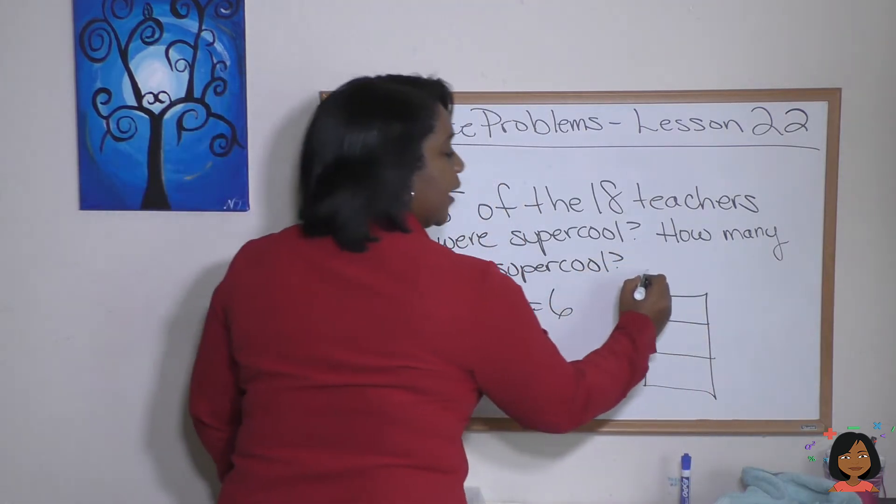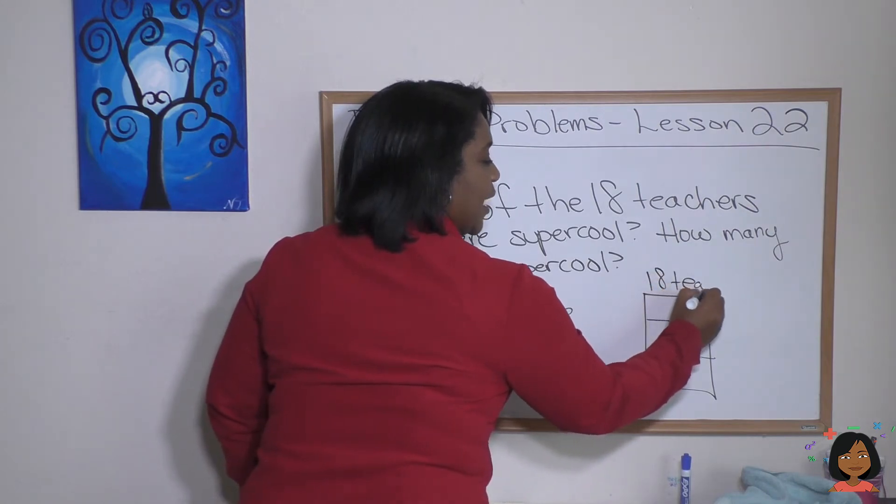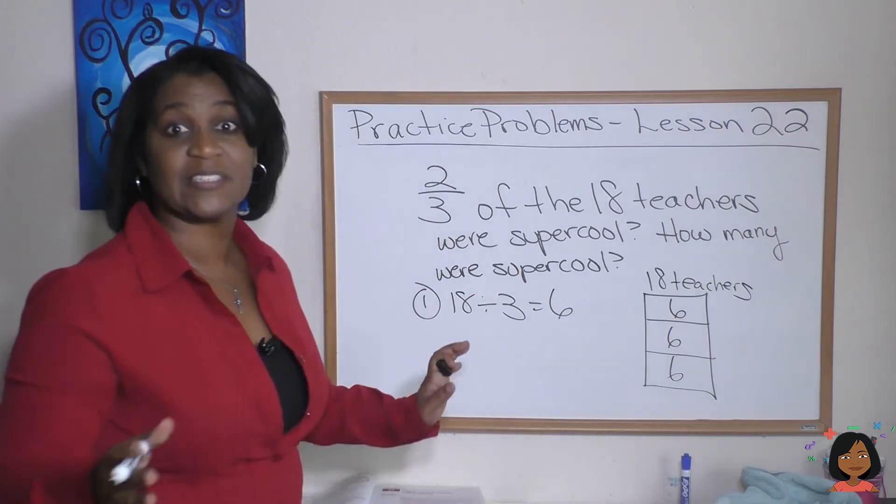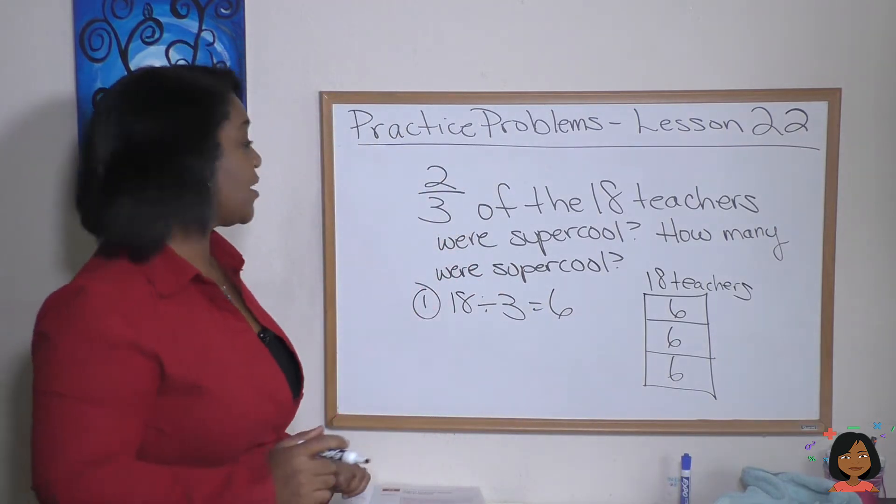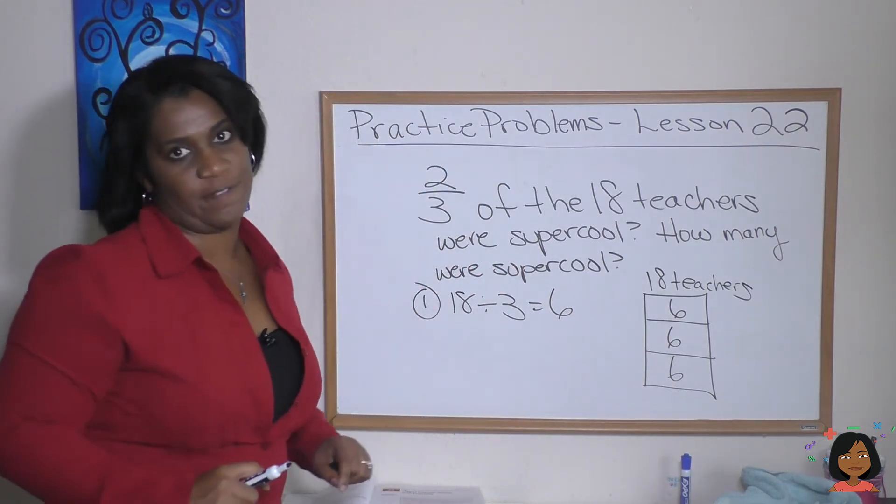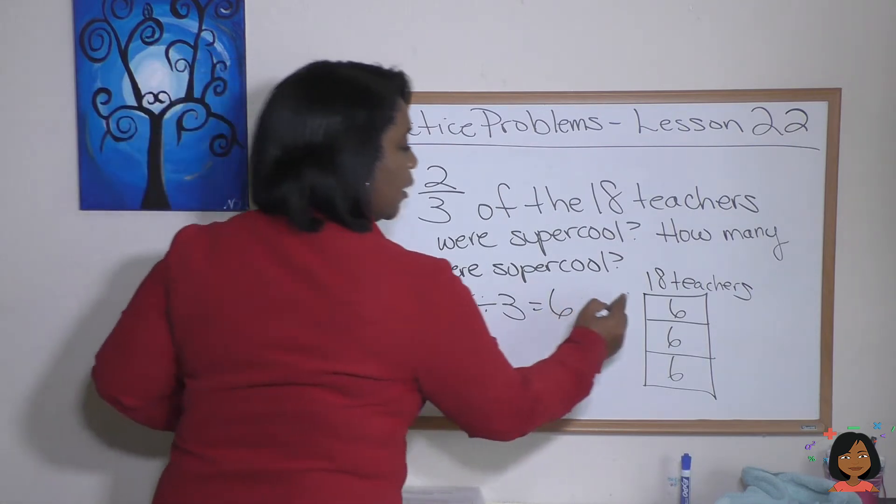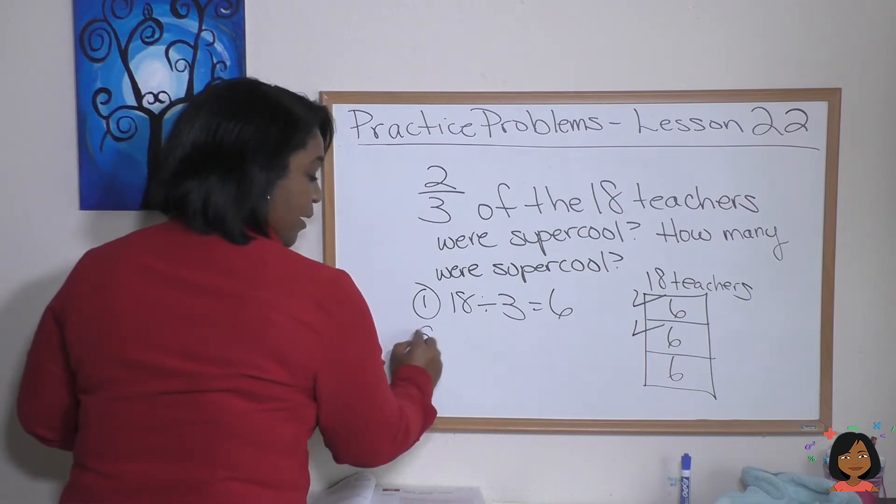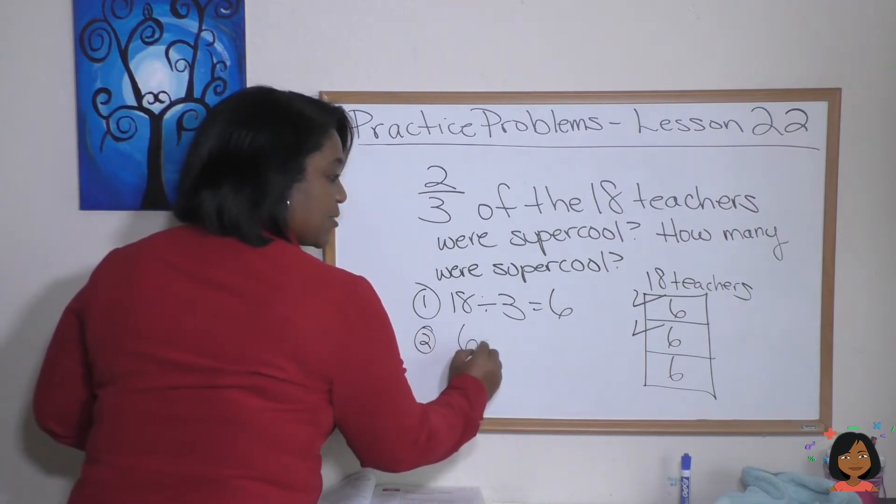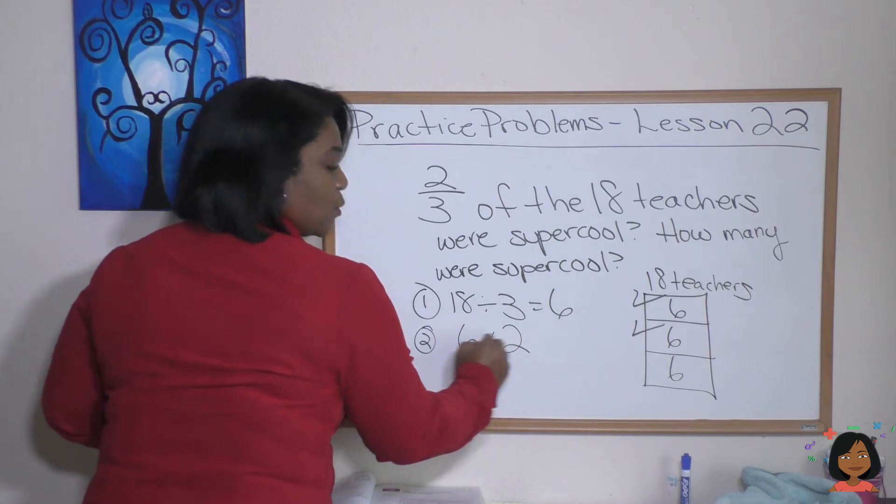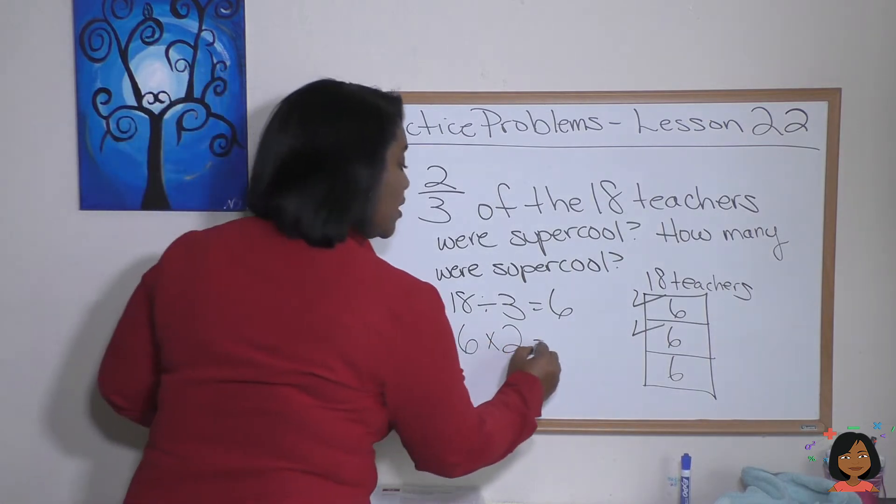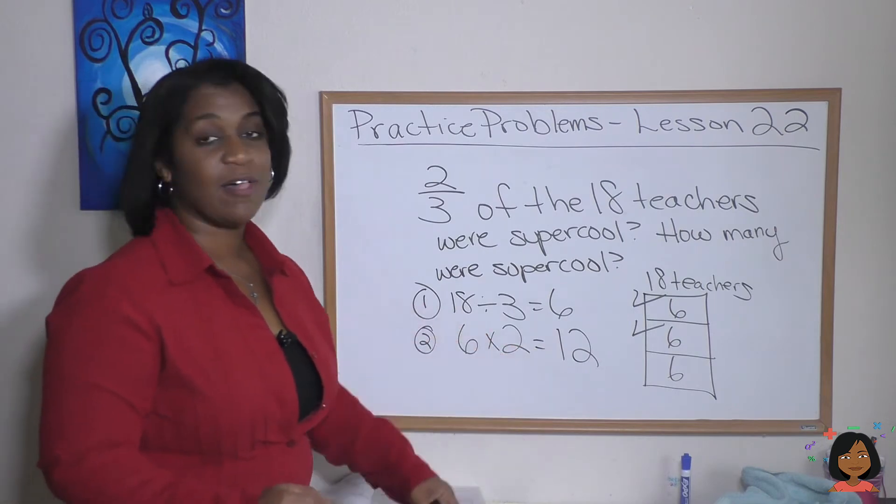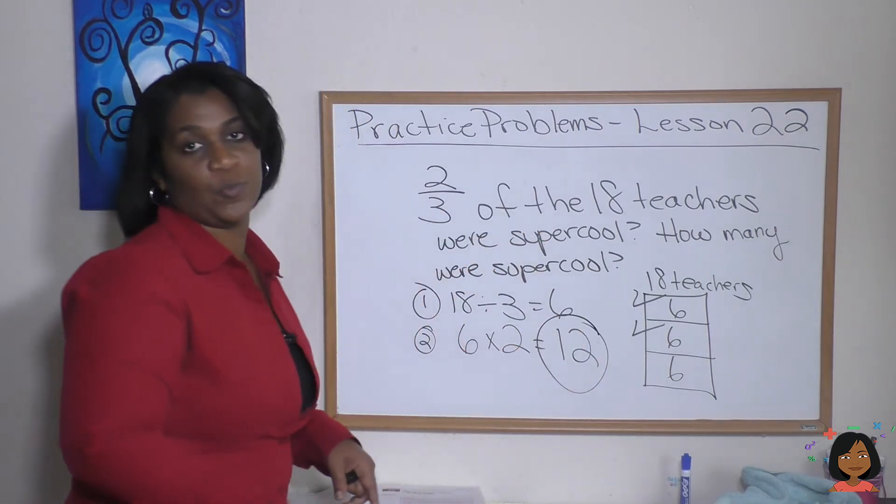That means I'm gonna draw this out for you. There are three groups, one, two, three, of 18 teachers and each group has six teachers in it. That's step one. Step two says highlight two of those groups. Okay, here we go, one and two, which is the same thing as saying for my step two: 6 times 2, 6 times 2 equals 12.